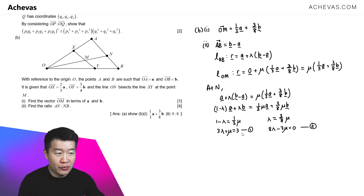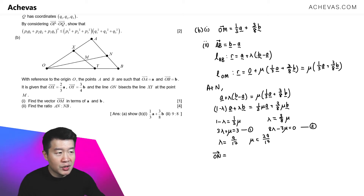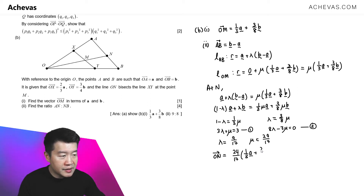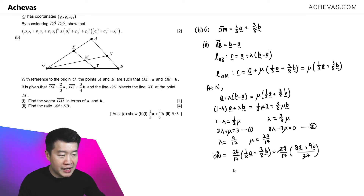Solving these two linear equations using a calculator gives lambda equals 9/17 and mu equals 24/17. To find ON, substitute mu equals 24/17 into the line equation: ON equals (24/17) times ((1/3)A plus (3/8)B), which simplifies to (24/17) times (8A plus 9B) divided by 24.